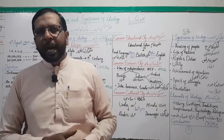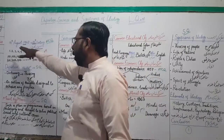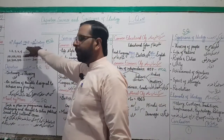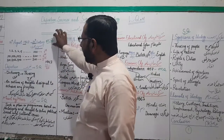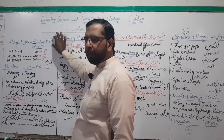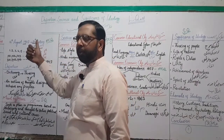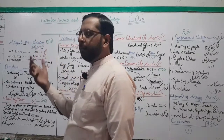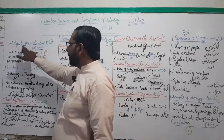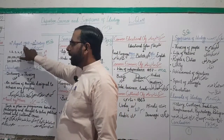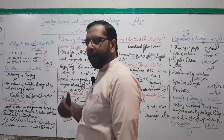Pakistan ka qiyam 20th century ka ek aham tareen waqia tha — on 14th August 1947, that was the 20th century. This is an important MCQ, as I mentioned, it has been asked in board papers many times. Pakistan ka qiyam kis sadi mein hua — sometimes students get confused and mix up, considering 1947 to be 19th century, but this is actually the 20th century.